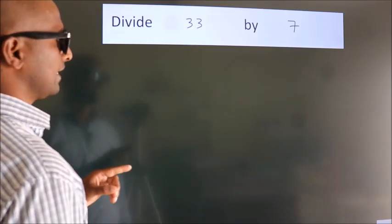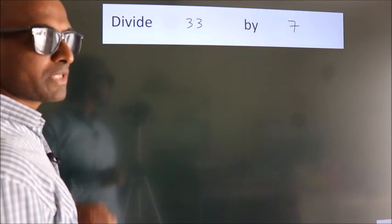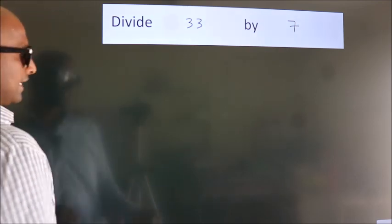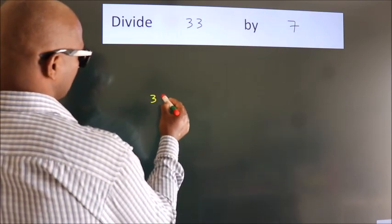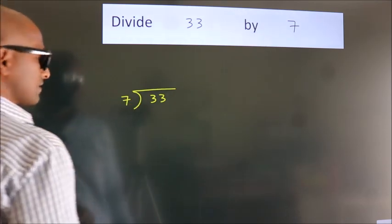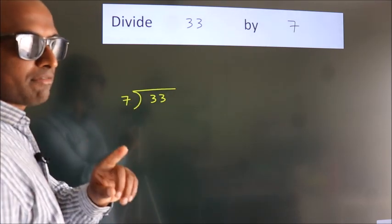Divide 33 by 7. To do this division, we should frame it this way: 33 here, 7 here. This is your step 1.